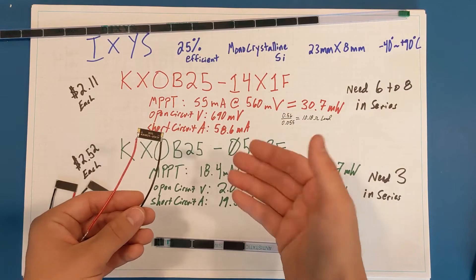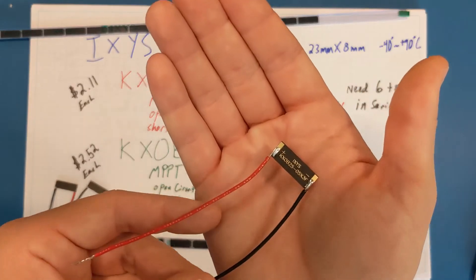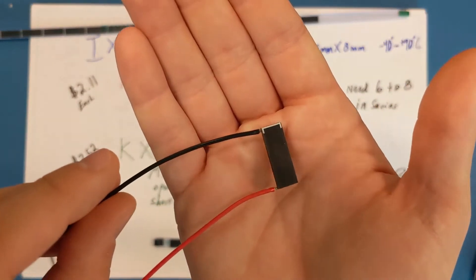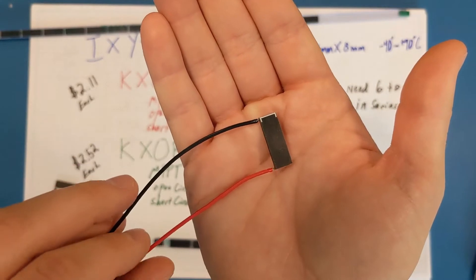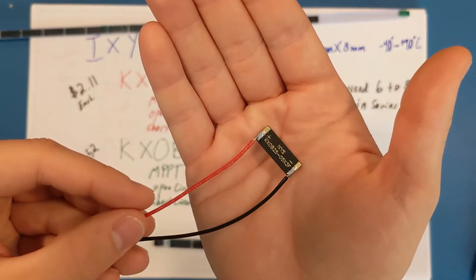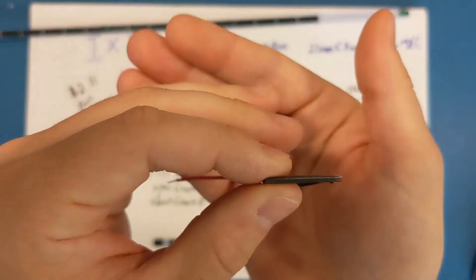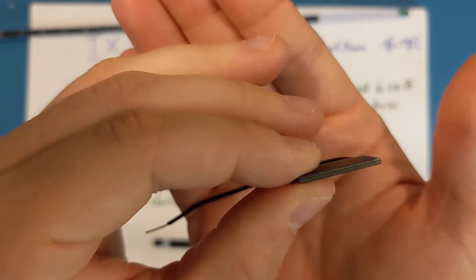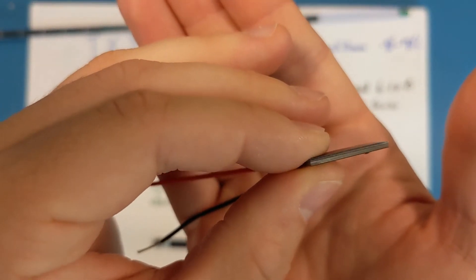As I mentioned before, these solar cells are essentially the only option when it comes to small commercially available cells that have decent performance data and aren't fragile either. These cells even have a little bit of encapsulation on them.